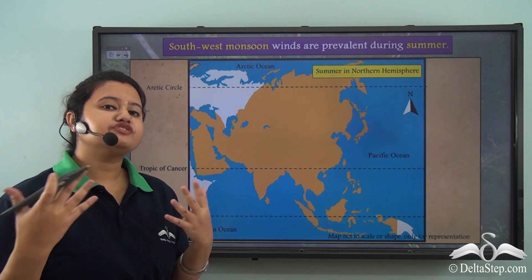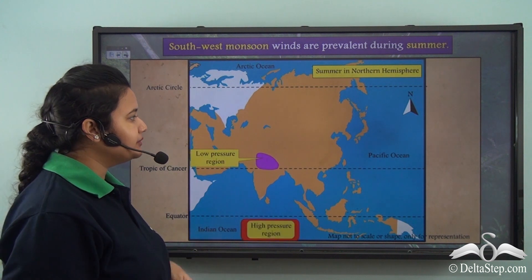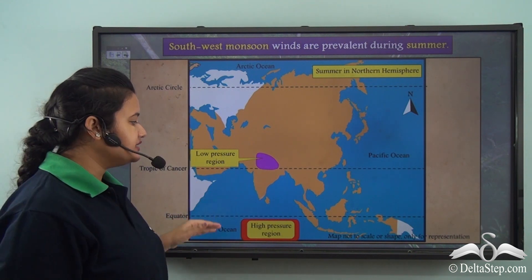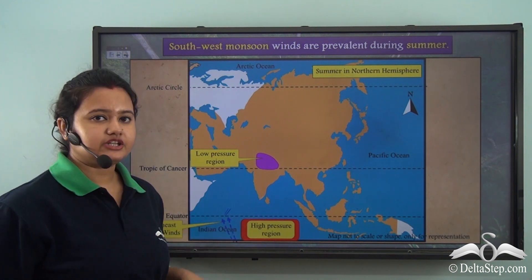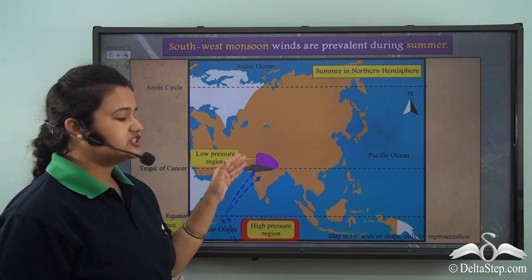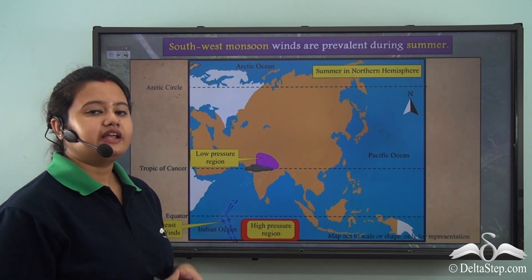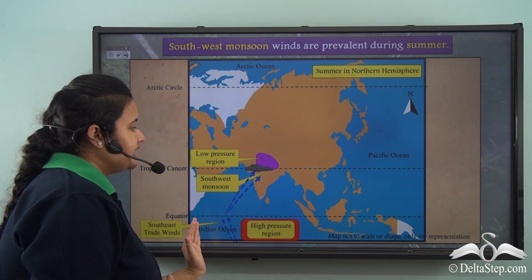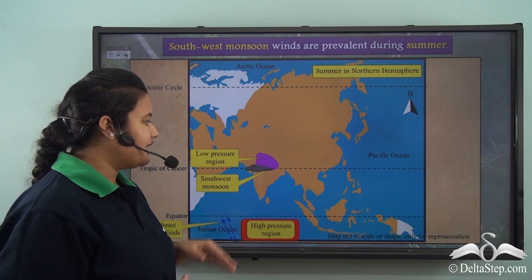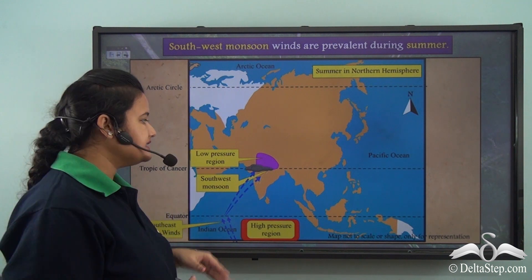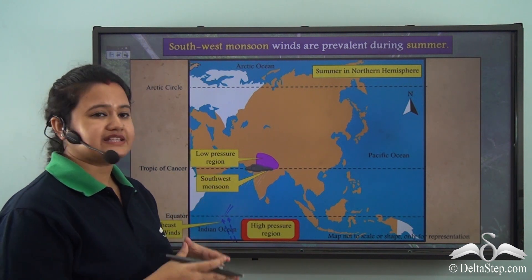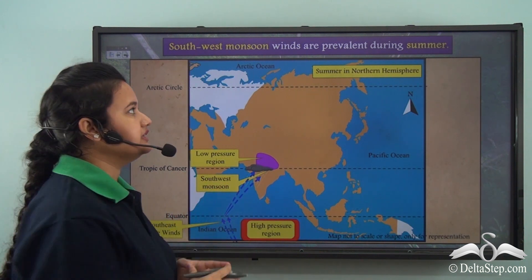Monsoon winds develop due to differential heating of land and sea. During summer, land masses have high temperatures, so low pressure conditions prevail over them, while the adjoining water bodies are comparatively cooler with high pressure conditions. Winds blow from high to low pressure, so the low pressure over land attracts the southeast trade winds. As these winds cross the equator, they get deflected in a southwest direction due to the Coriolis effect. These southwest monsoon winds pick up moisture as they pass over water bodies and cause rainfall in most southeastern parts of Asia, especially India.